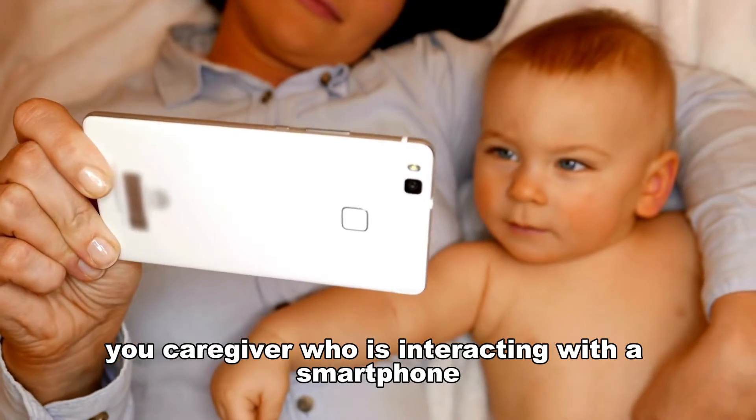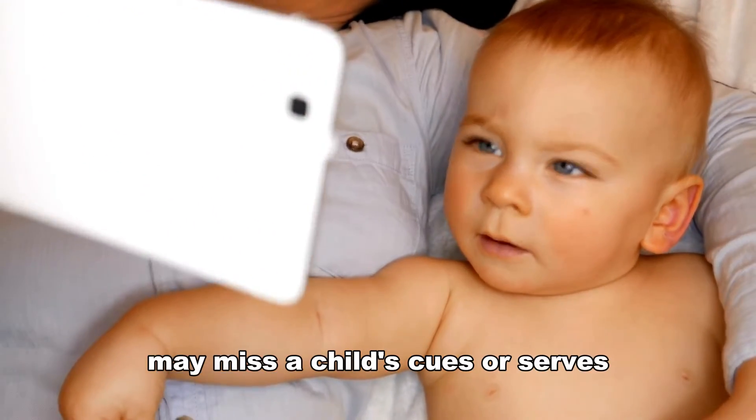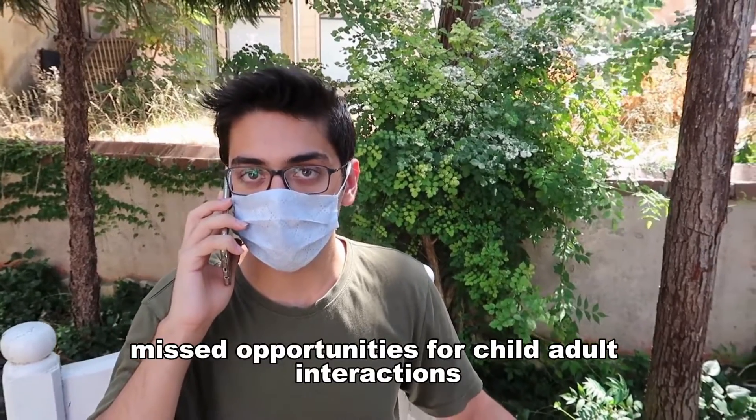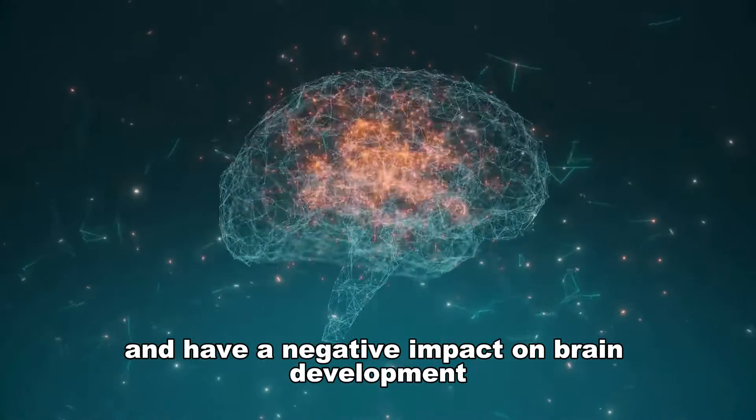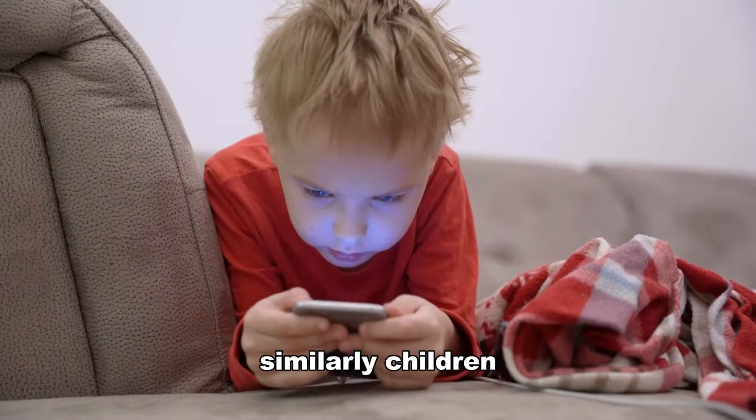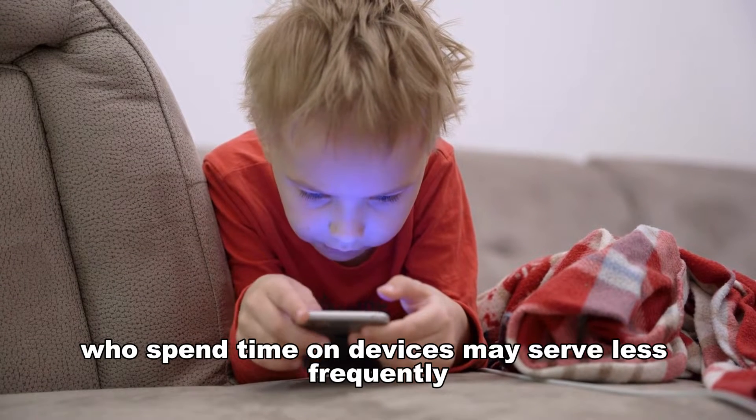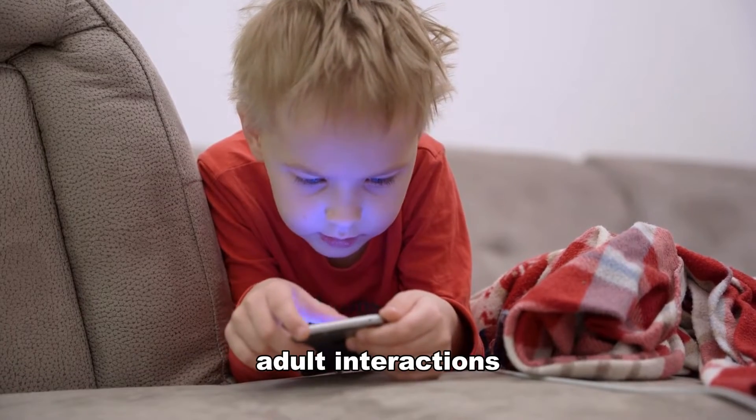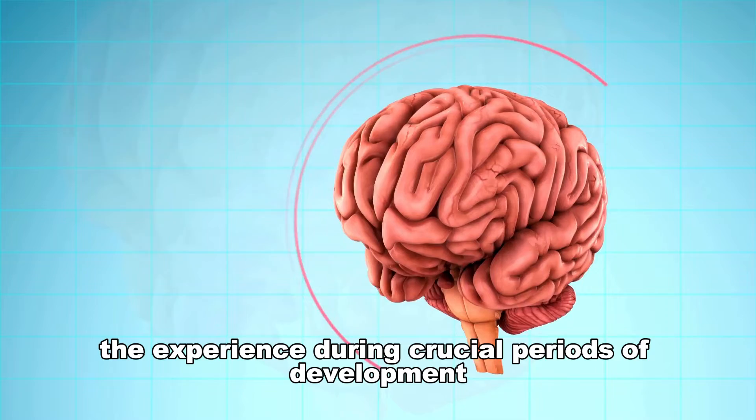A caregiver who is interacting with a smartphone may miss a child's cues or serves. Over time, these missed opportunities for child-adult interactions can add up and have a negative impact on brain development. Similarly, children who spend time on devices may serve less frequently, which also limits the number of child-adult interactions they experience during crucial periods of development.